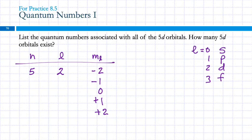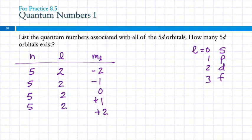Will n always equal the orbital number? The principal level tells us what floor of the hotel; l tells us which room; and what's not specified is which of the five beds in that room. For these five beds, we have five separate designations: they are all n=5, l=2, and then a different m sub l — that is, (5,2,-2), (5,2,-1), (5,2,0), (5,2,+1), and (5,2,+2). The fourth quantum number tells us whether that particular electron is sleeping right side up or upside down — we assume right side up first, then upside down if necessary.